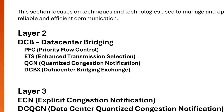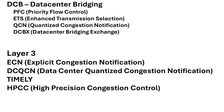In Layer 2, the DCB suite of technologies includes PFC (Priority Flow Control), ETS, QCN, and DCBx. These are very important and heavily used in AI networks these days. For Layer 3, the main topics are ECN — the most common one — then DCQCN, which is based on both PFC and ECN, delay-based protocols like TIMELY, and finally HPCC, the High Precision Congestion Control protocol, which is a relatively newer one.